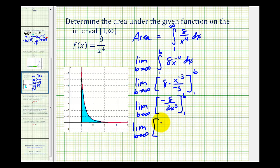So we'll have the limit as b approaches infinity of negative eight all over three times b cubed minus negative eight all over three times one cubed. Well as b approaches infinity,